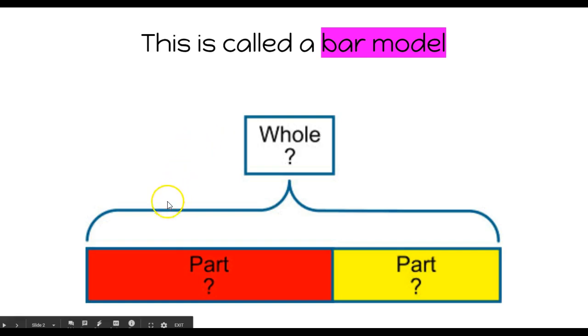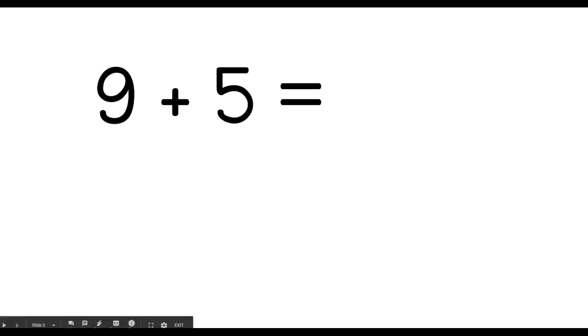Let's talk a little bit more about using the bar model. For instance, let's take the math sentence here of 9 plus 5, so we have two addends, 9 plus 5.